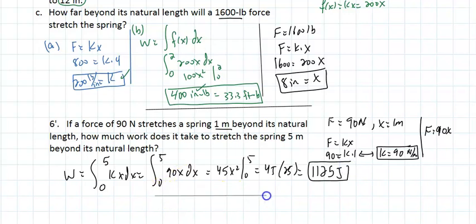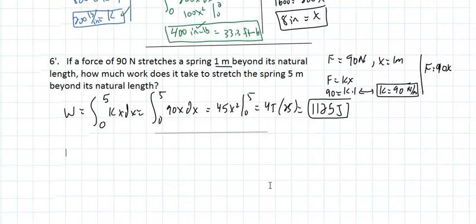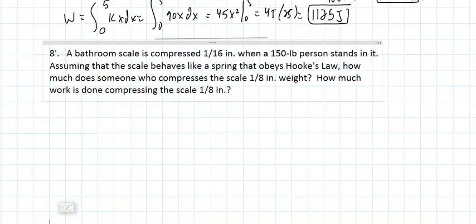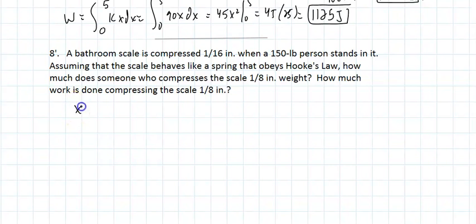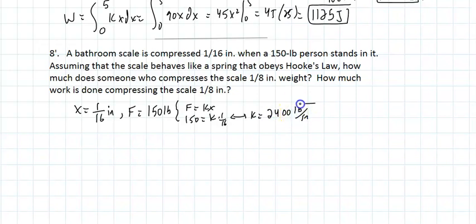Problem 8: A bathroom scale is compressed 1/16 inch when a 150-pound person stands on it. From F = kx, we get 150 = k times 1/16, so k = 2400 pounds per inch. The force for this problem is 2400x.